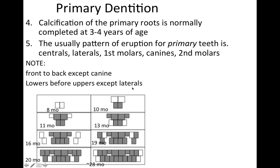Here are two general rules — definitely got to remember this. As a general rule: front to back except canine, and then lowers before uppers except laterals. The boxes on the bottom represent the mandibular teeth and on the upper are the maxillary teeth. You've got the lowers before uppers as the general rule, and then you see the laterals come in first on the upper — that's the exception: lowers before uppers except the laterals.